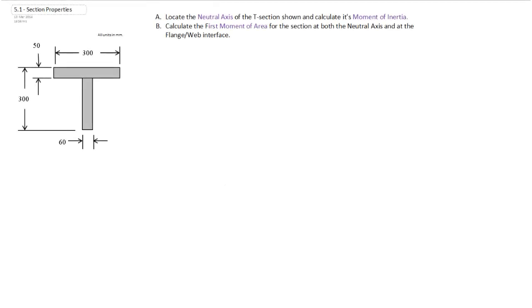So before we can analyze a beam in flexure, we need to calculate some of the geometric properties of the cross-section of the beam itself. So what we've done is we've thrown up a T-section on here, and we're going to look at some of the key properties that we need to know, such as the location of the neutral axis, its moment of inertia, and the first moment of area in a couple different spots.